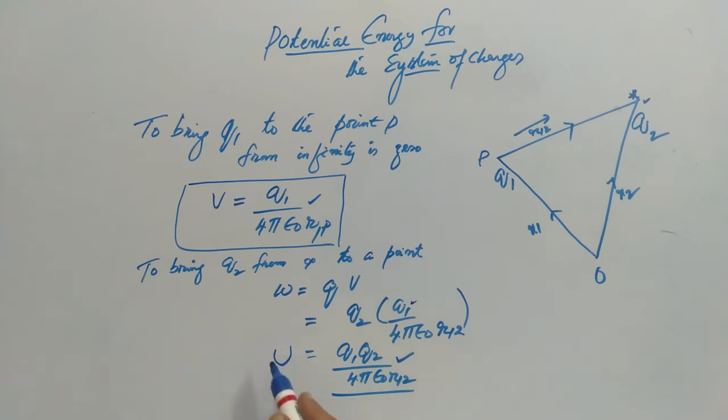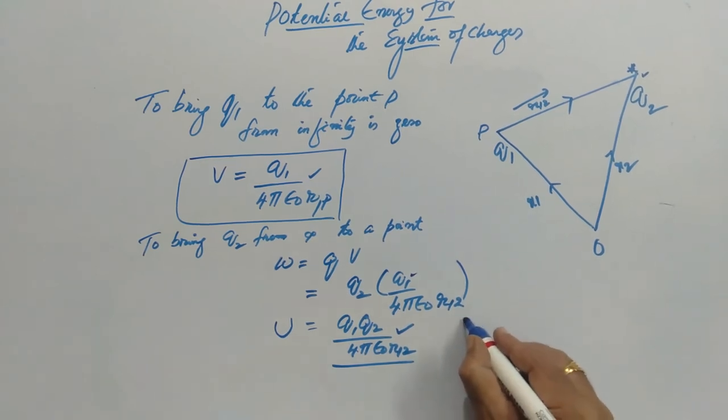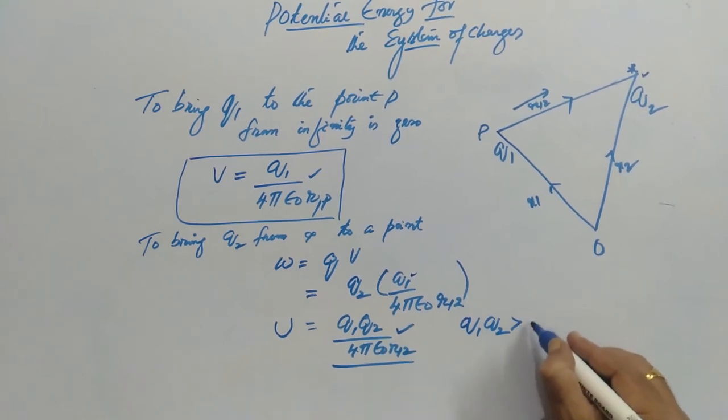So this equation is valid for any nature of charges. Suppose if both are of same charge, then Q1 Q2 will be greater than zero. In that case, the potential energy is positive.